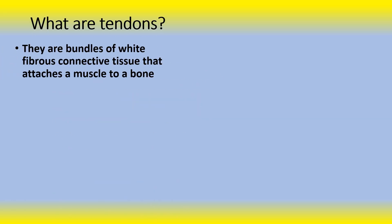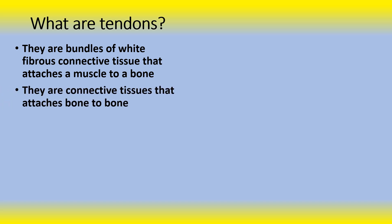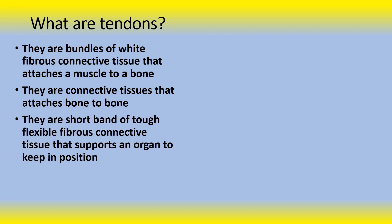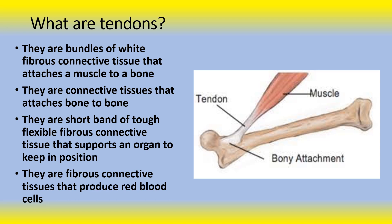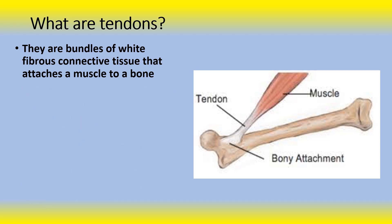Next question: What are tendons? Are they bundles of white fibrous connective tissue that attach a muscle to a bone? Are they connective tissue that attaches bone to bone? Are they short bands of tough flexible fibrous connective tissue that support an organ to keep it in position? Or are they fibrous connective tissue that produce red blood cells? As you can see in the photo, tendons are bundles of white fibrous connective tissue that attach a muscle to a bone. Tendons are a mechanical bridge — they provide the transmission of muscle strength to the bones and joints.